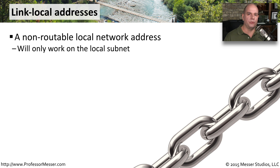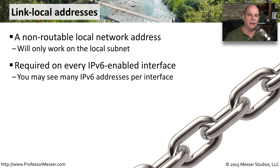One IPv6 address that you'll see on every single one of your interfaces is a link local address. This is similar to the APIPA address in IPv4, where you're given an address that works on your local subnet. It can't communicate off of this subnet, but it's one you can use to talk to all of the devices that might be local to you. Every interface that has IPv6 enabled is required to have a link local address, so don't be surprised that there are multiple addresses associated with an interface — that's perfectly normal in the IPv6 world.